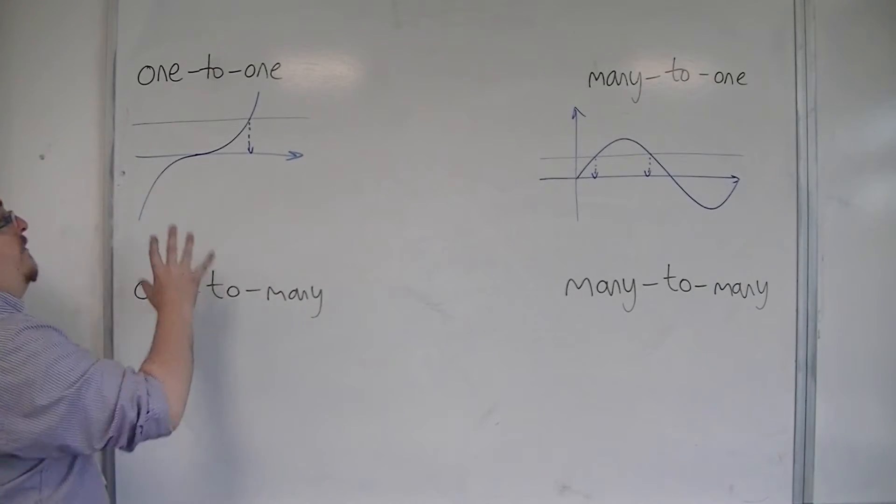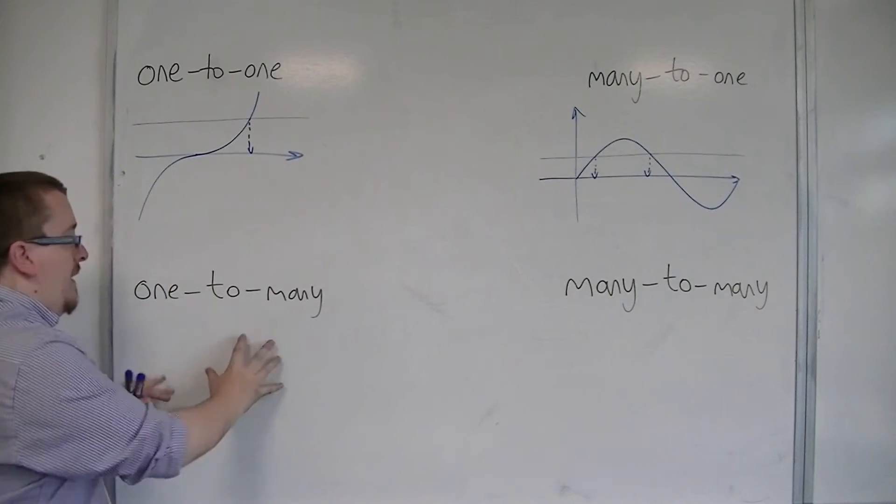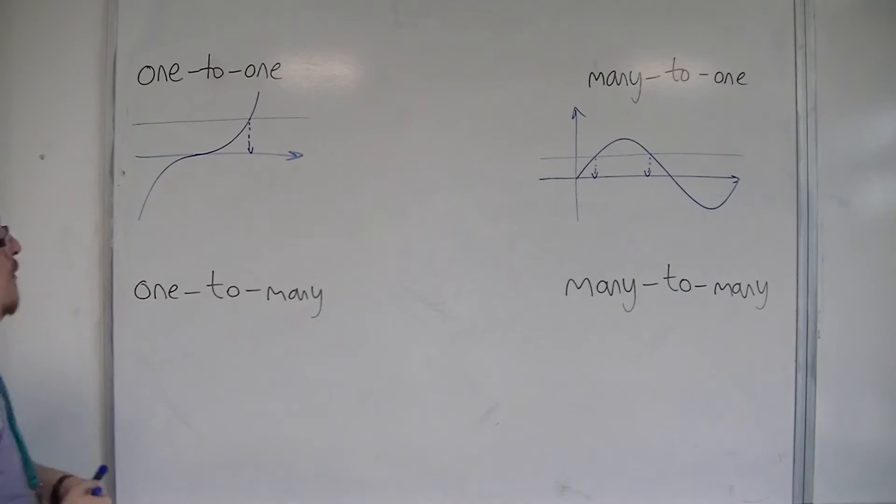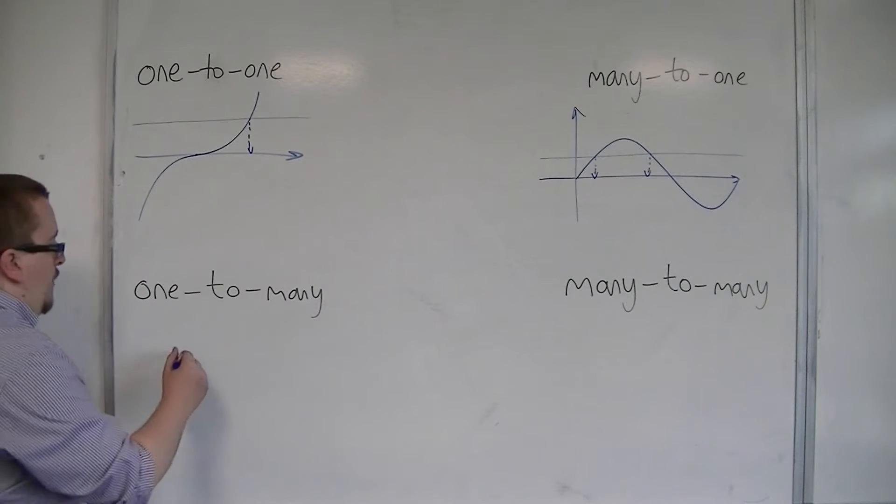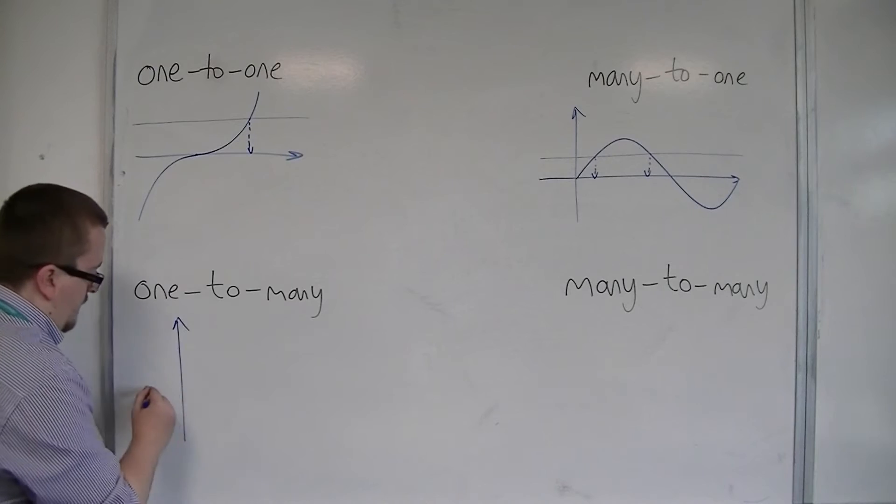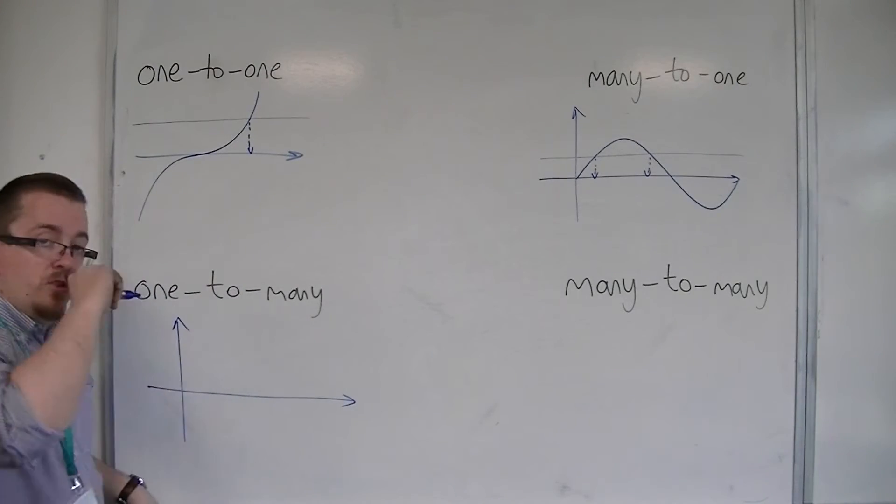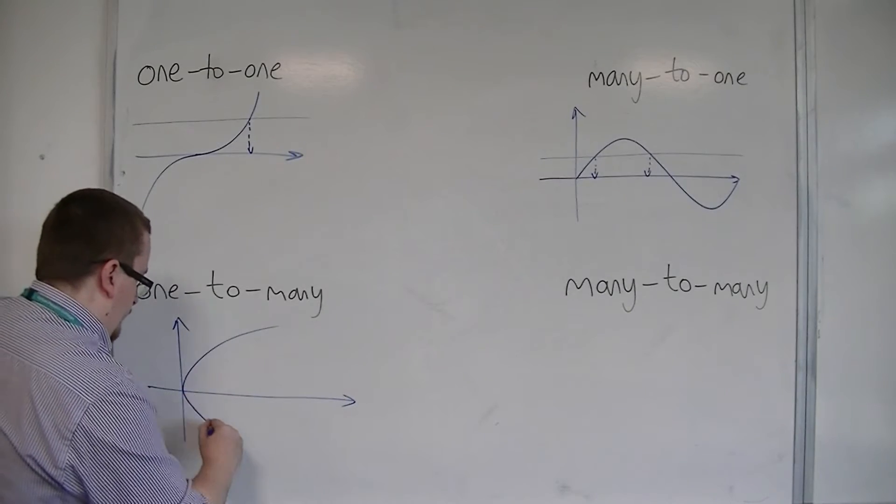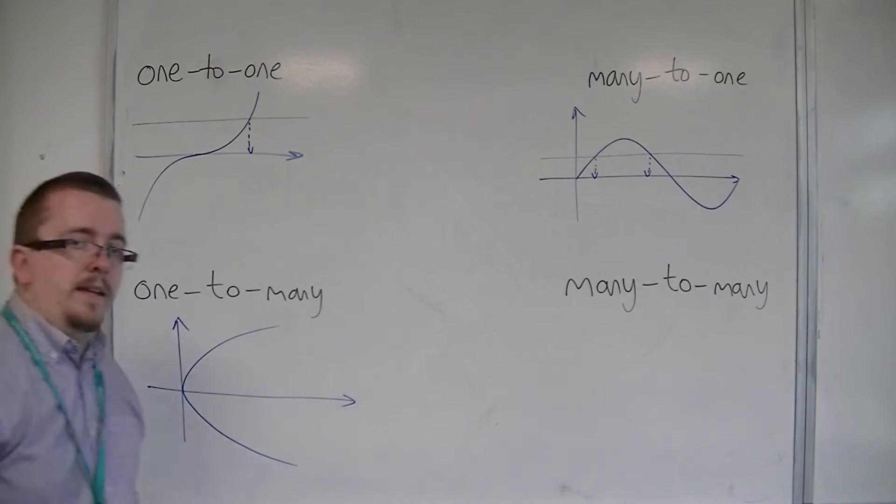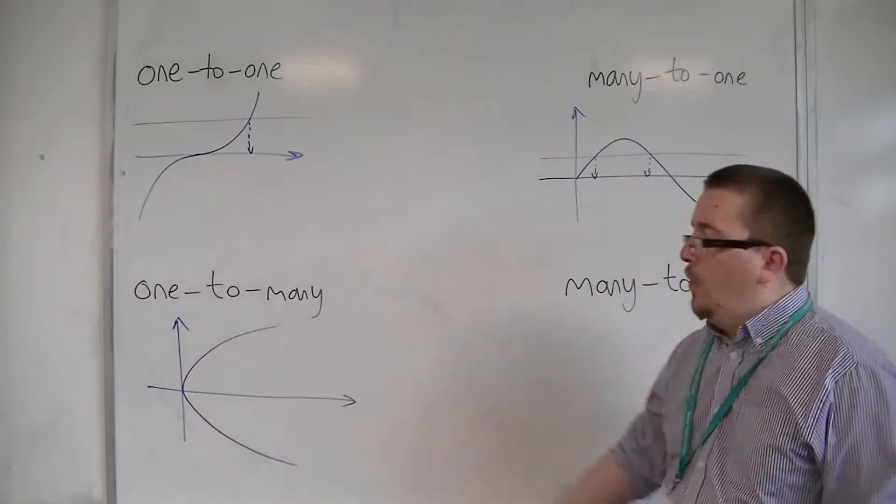So if you've got one to one and many to one, then there's one to many. Now one to many, the types of curves that we look at here can be quite strange. Here is one for example. This would be one to many. This would be the curve x equals y squared.